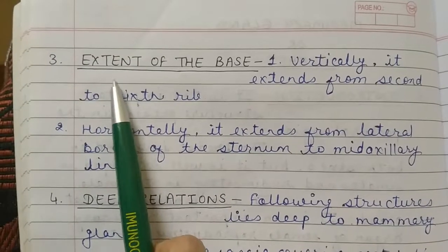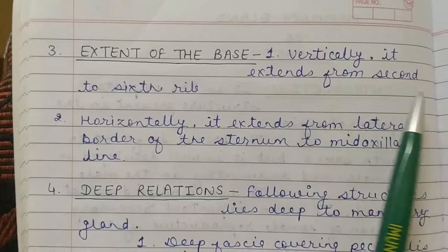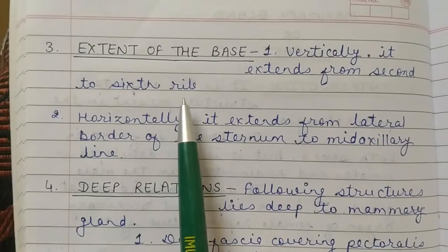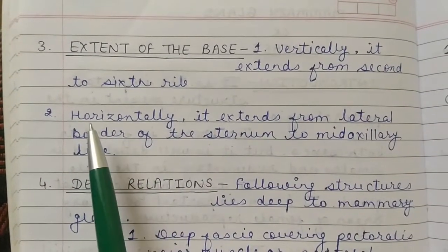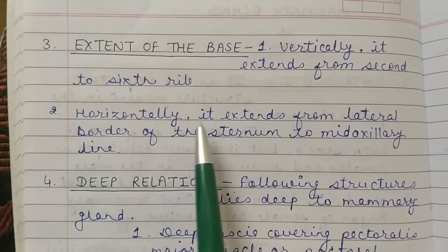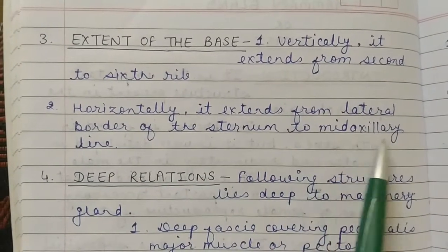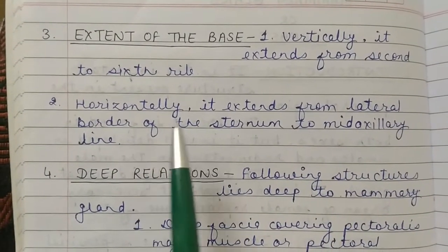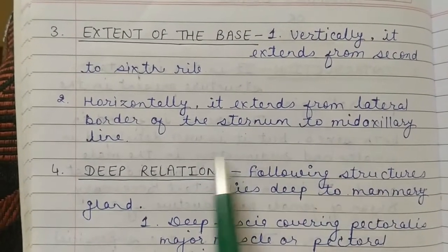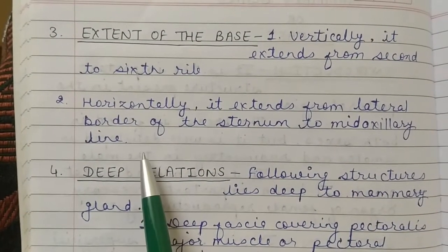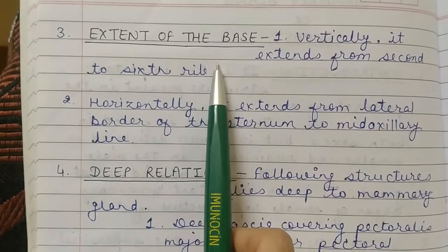The third point is the extent of the base. Vertically, it extends from the second to the sixth rib. Horizontally, it extends from the lateral border of the sternum to the mid-axillary line. This is the extent of the base of the mammary gland.